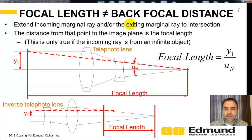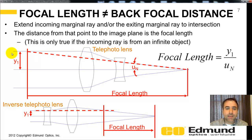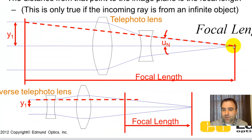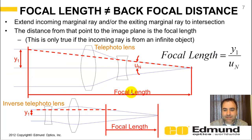Let's talk about focal length for a complicated system. The key point is that your focal length does not equal the back focal distance. For something like a camera lens, you cannot assume the focal length is the distance from the last element to where the image is formed. To find the focal length of a telephoto lens — where the focal length is longer than the physical lens — you trace the marginal ray that enters at semi-height y sub one through the system. You then project the aft marginal ray forward until it intercepts the incoming marginal ray; that distance is your focal length. Focal length equals marginal ray entrance semi-height divided by the exit marginal ray angle.